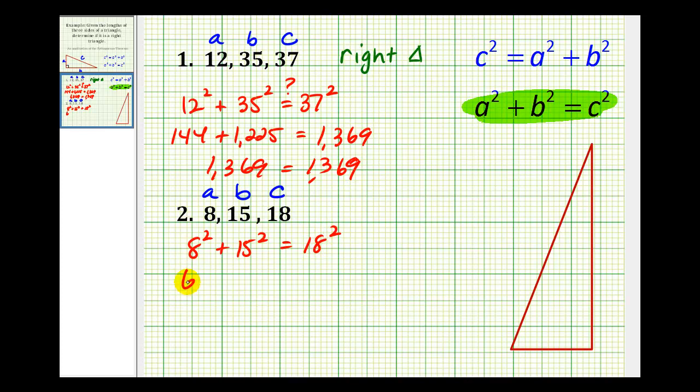8 squared would be 64. All along here, we have question marks because we're not sure if this is true. Well, 64 plus 225 equals 289, which does not equal 324.